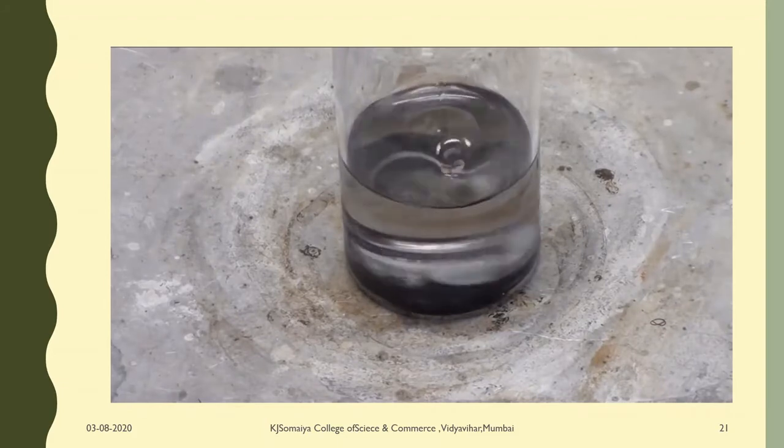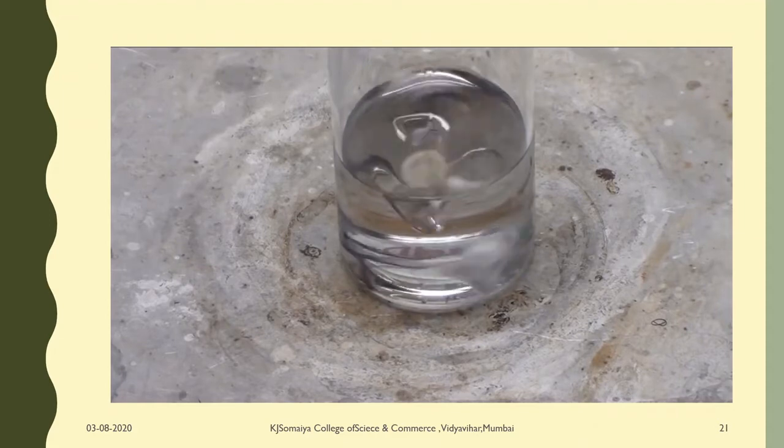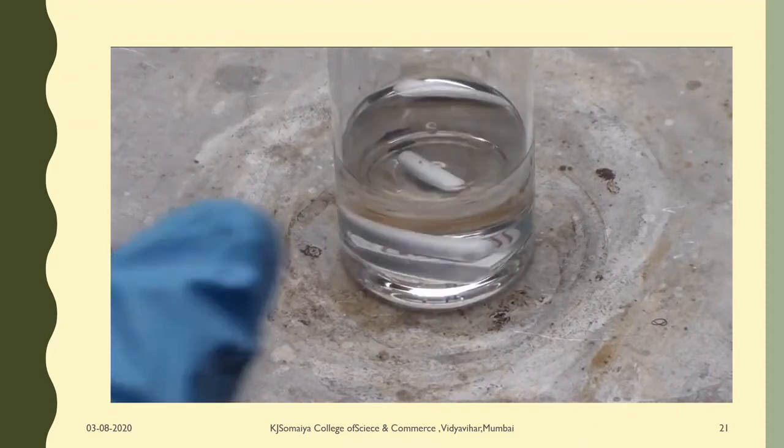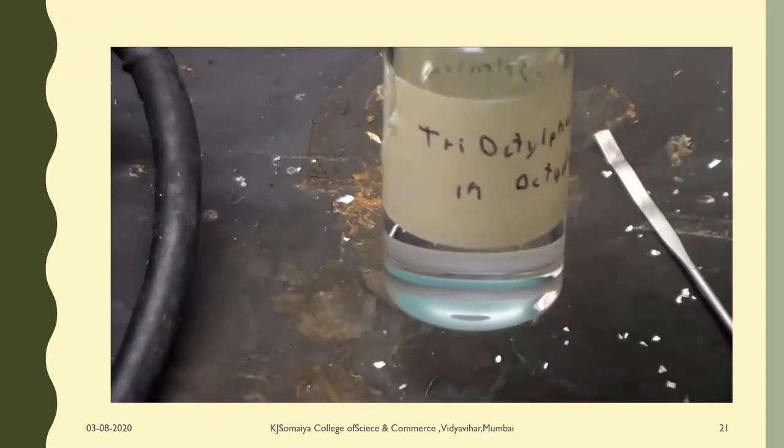Keep stirring and gently heat it until all the selenium dissolves into a clear liquid. What's happening is the tri-octylphosphine is reacting with the selenium to form tri-octylphosphine selenide. Once it's ready, seal it and let it cool. This will provide us with about 5 experiments worth.